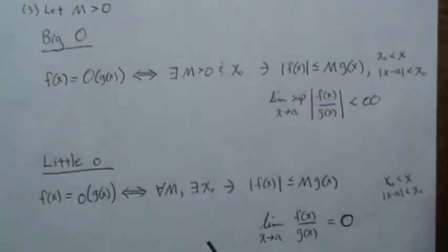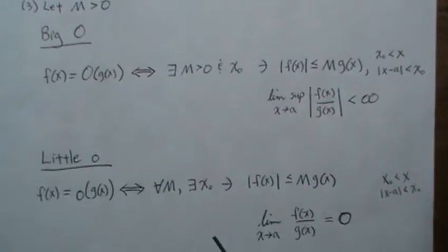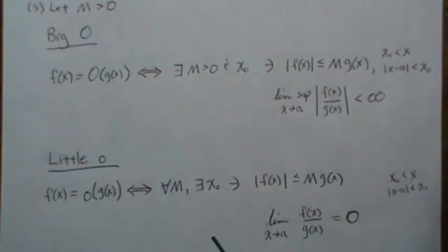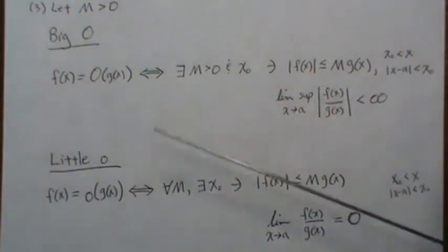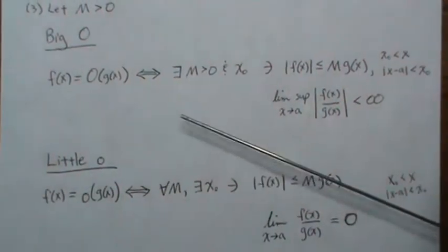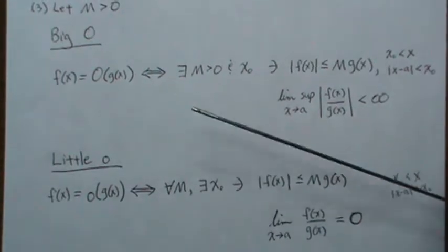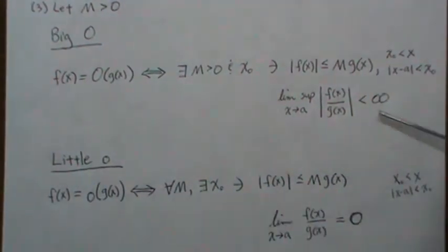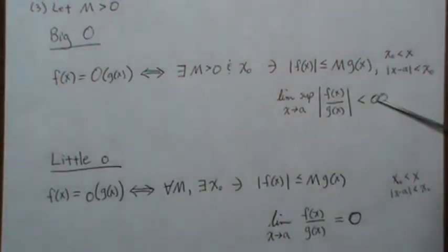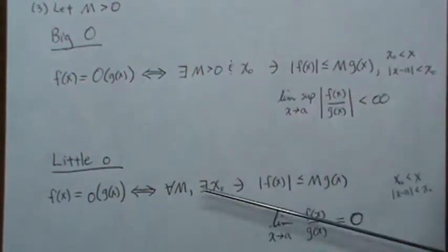Here are our two definitions of big O and little o. The two things that are different is this symbol and whether the limit is infinity or zero.